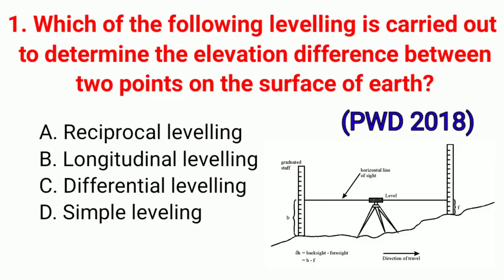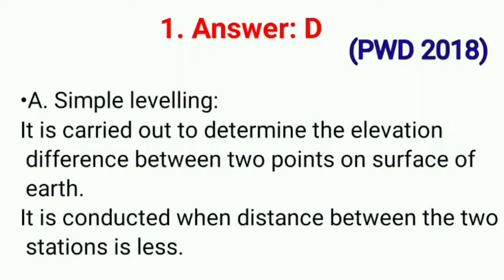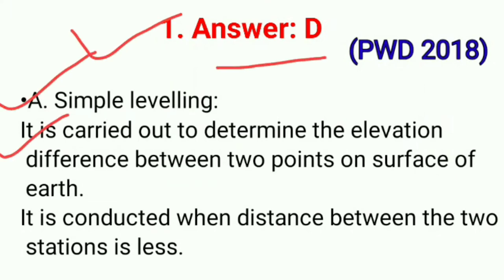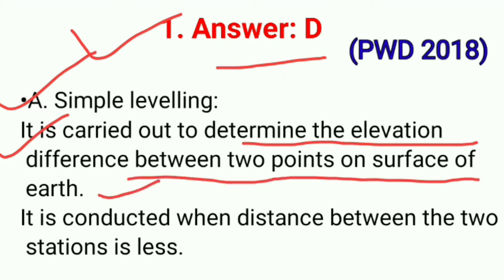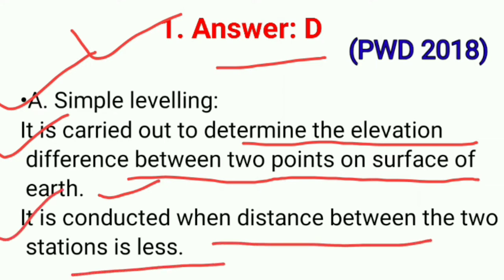Question No. 1. Which of the following leveling is carried out to determine the elevation difference between two points on the surface of earth? This question is asked in exam PWD 2018. The correct answer is option D: Simple leveling. It is carried out to determine the elevation difference between two points on the surface of earth, and it is conducted when distance between the two stations is less.